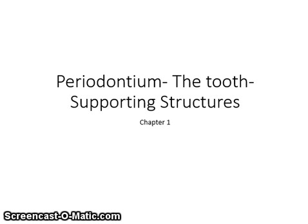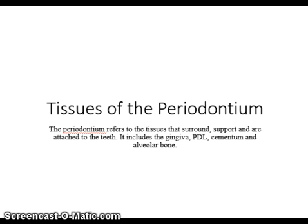The periodontium is the structures that support the tooth. The tissues of the periodontium include the gingiva, the periodontal ligament, the cementum, and alveolar bone. If you look at page 4 in your textbook, Table 1-1 gives a brief description of each structure and its function.